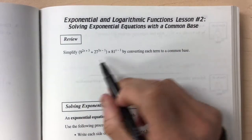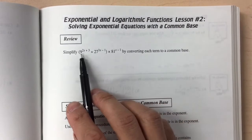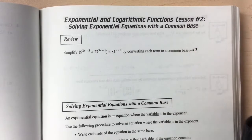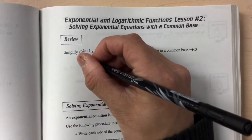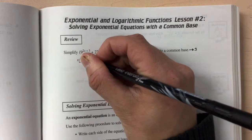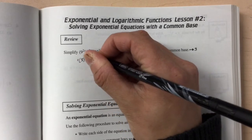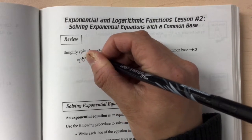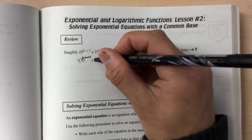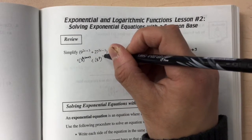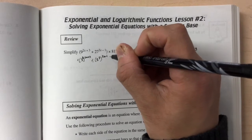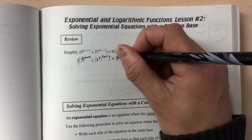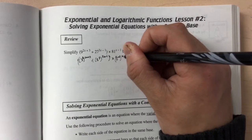With this first one, I just want to convert each of these to a common base. Between the three of them, it looks like our common base is going to be 3. So 9 is the same thing as 3 squared. So 3 squared to the power of 2x plus 3, divided by 3 cubed to the power of 3x minus 1, and we're multiplying this by 3 to the power of 4x minus 1.